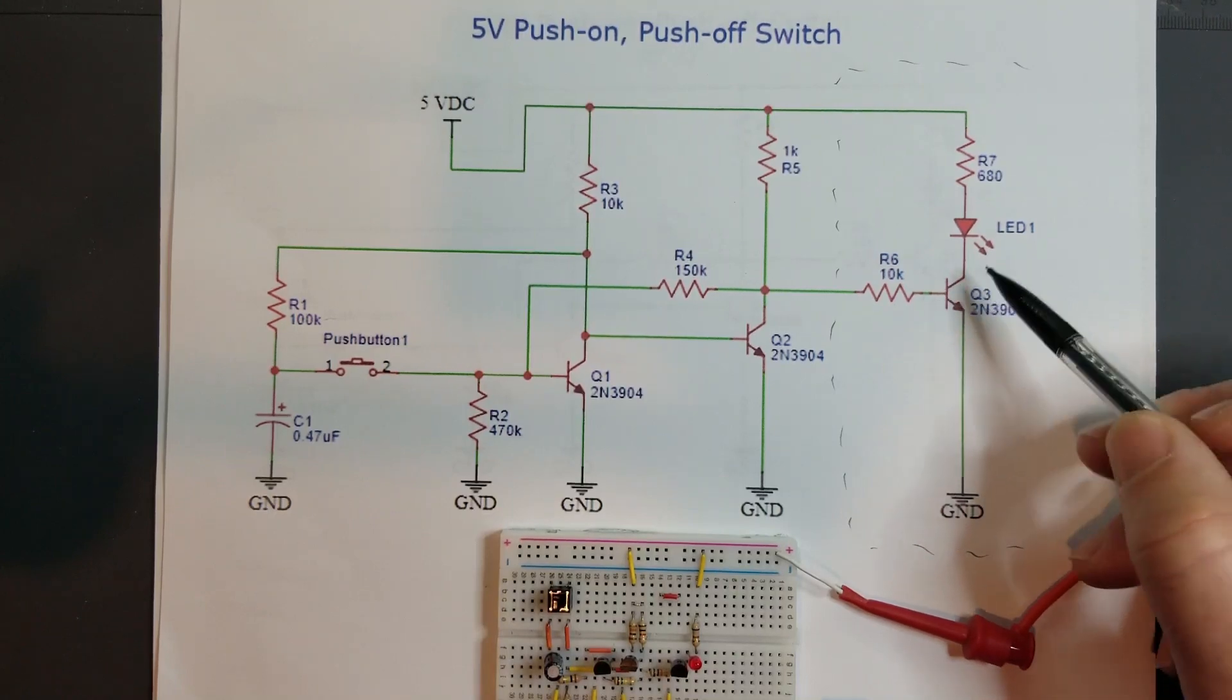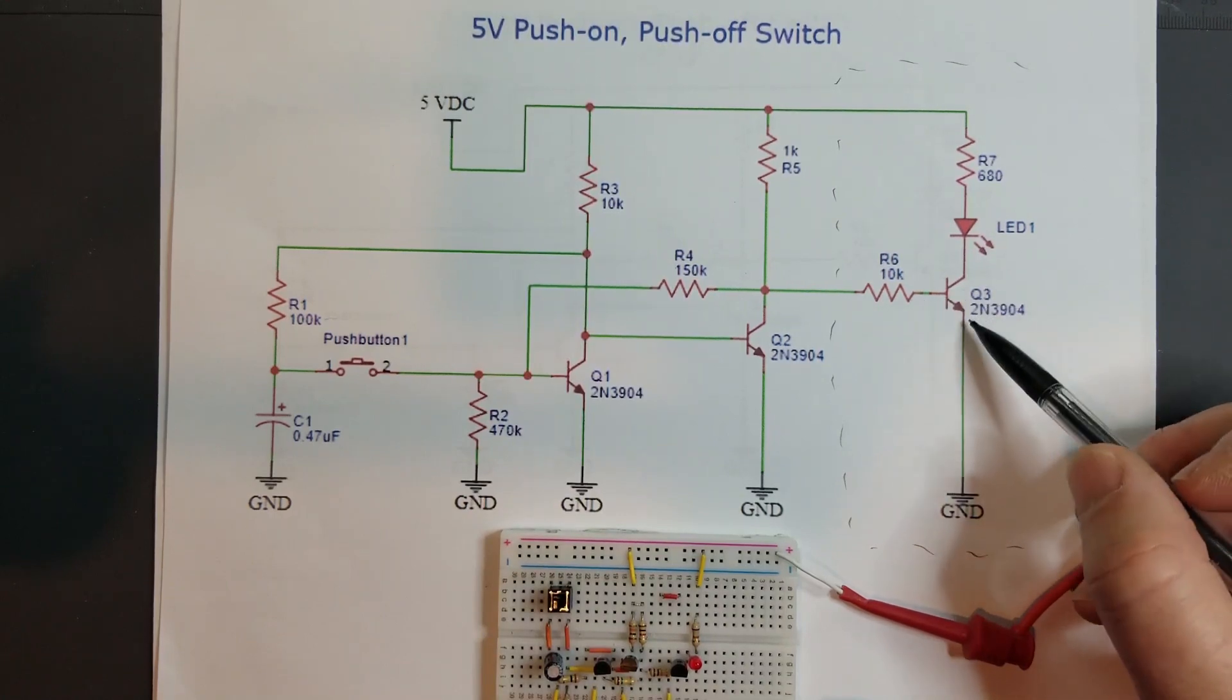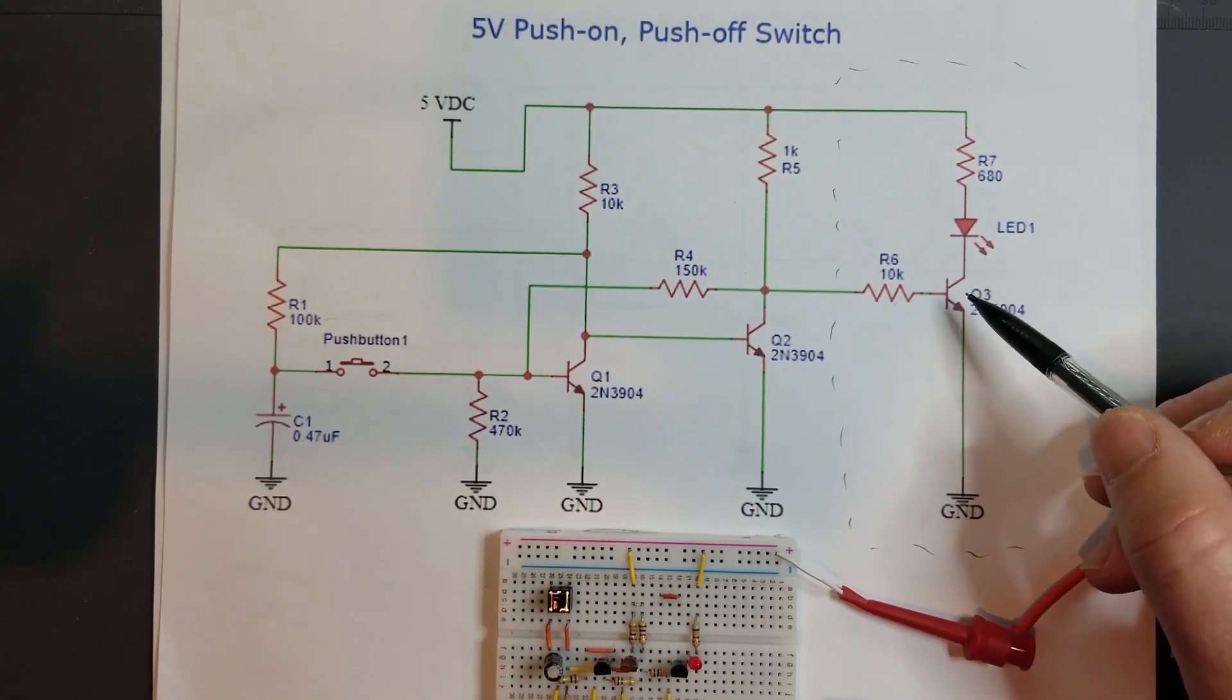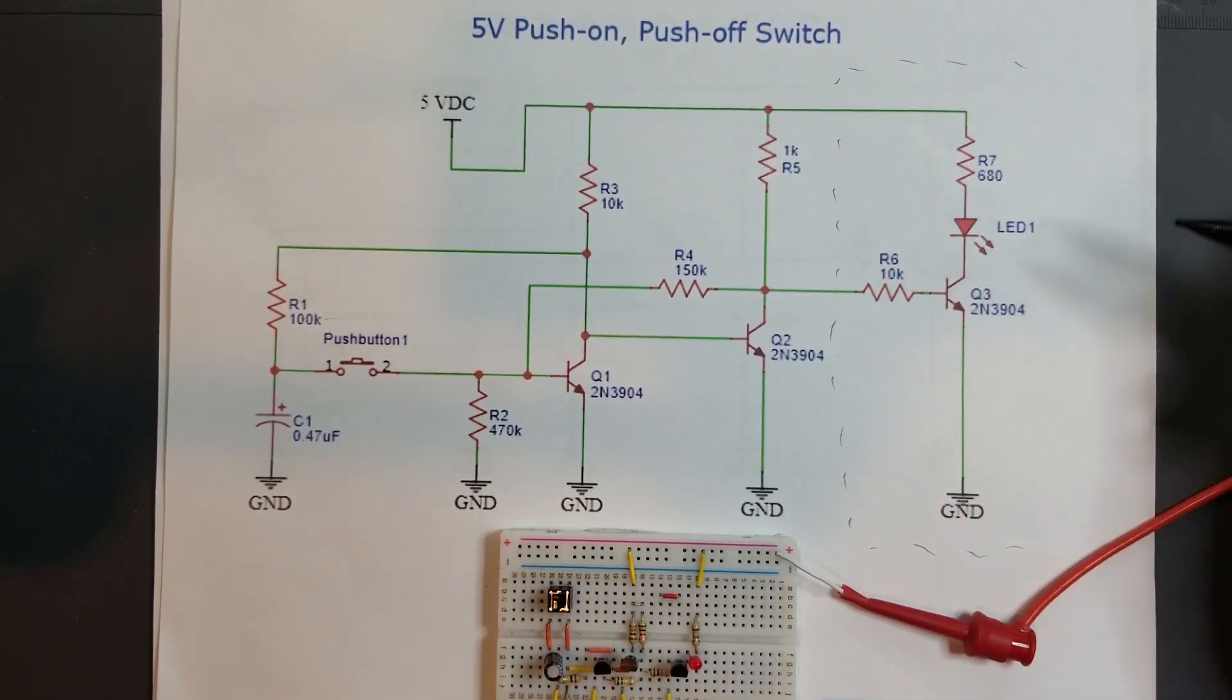Much higher than that and then you stand the chance of taking this transistor and putting it into its active region, where we want this either to be in cutoff or saturation. So in order to do that, this 10k resistor—if you wanted to use a relay, say, that has a 100 ohm coil—